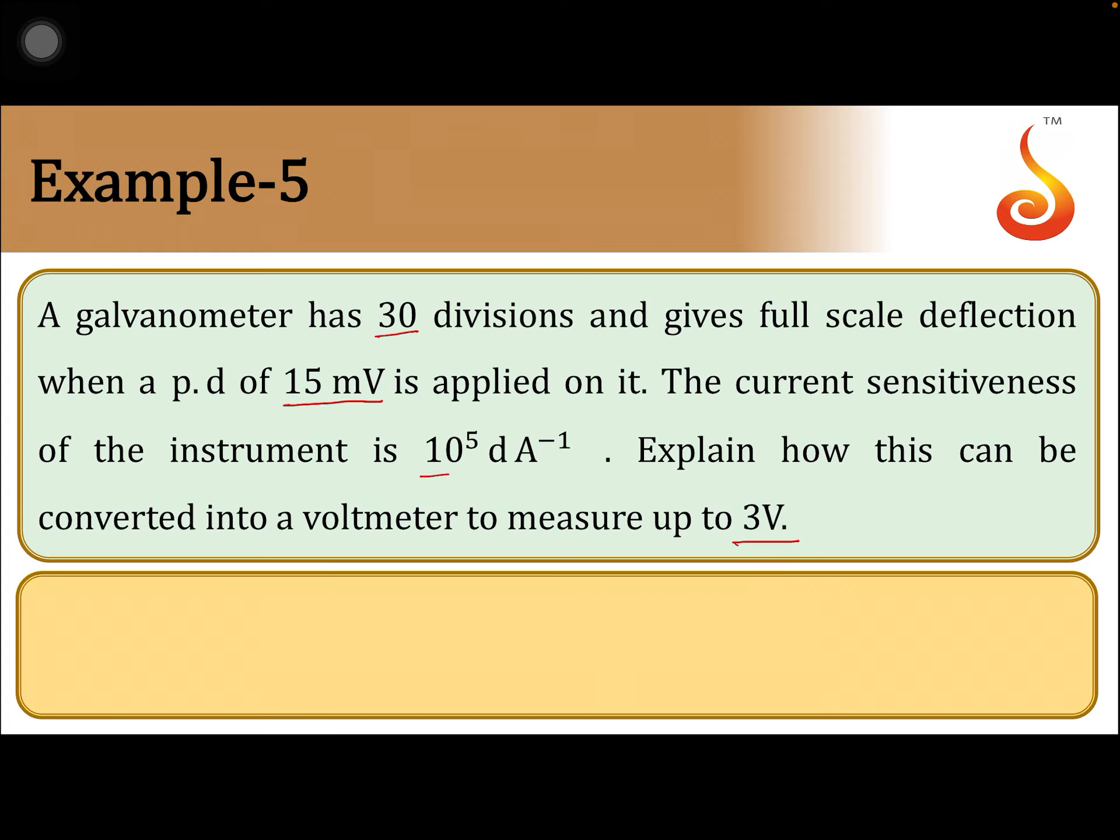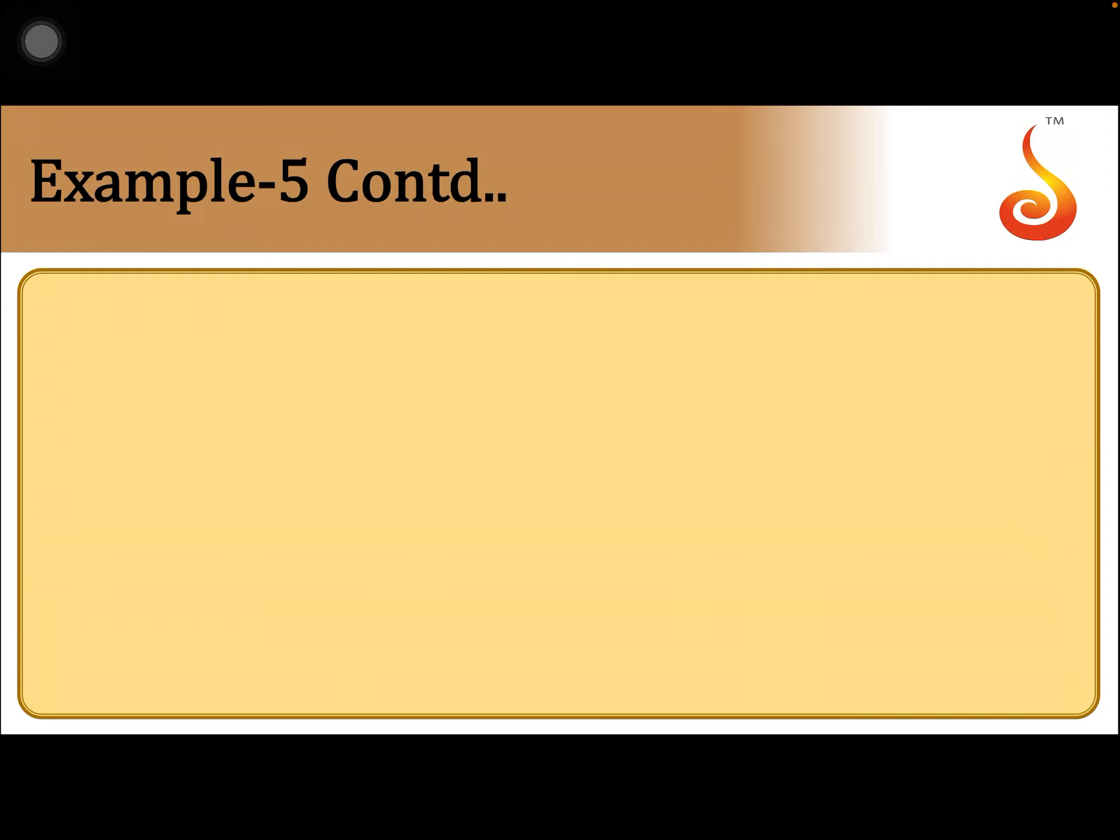It is given that current sensitivity is 10 to the power 5 division per ampere. So, what is current for full-scale deflection that can be calculated from this. Ig should be equal to, see 10 to the power 5 divisions for 1 ampere current. So, for 1 ampere 10 power 5 divisions. For 30 divisions, what it should be? So, it should be 30 divided by 10 to the power 5.